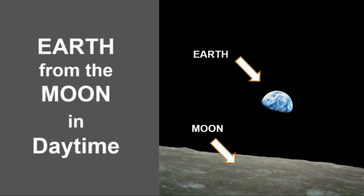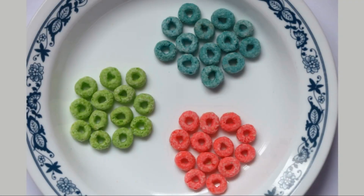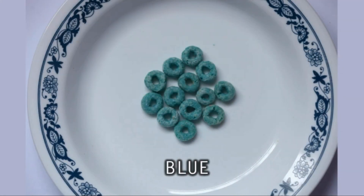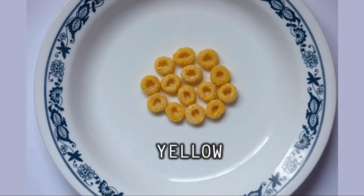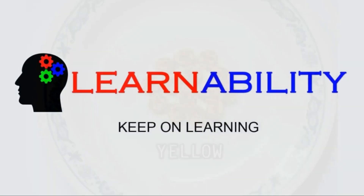So the cereal analogy: why the sky is blue is because you start off with three colors of Froot Loops. The blue ones go and scatter in the sky, and the red and green Froot Loops come straight at you and add up to appear yellow — and that's what the color of the sun appears to be. Thanks for watching this learnability video. Keep on learning!